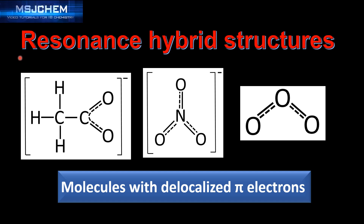Next we'll look at the resonance hybrid structures of two ions and a molecule: the ethanolate ion, the nitrate ion, and the ozone molecule. These are all molecules with delocalized pi electrons. In the ethanolate ion, both carbon to oxygen bonds are of equal length and equal strength. In the nitrate ion, all three nitrogen to oxygen bonds are also of equal length and equal strength, and the same occurs in ozone.